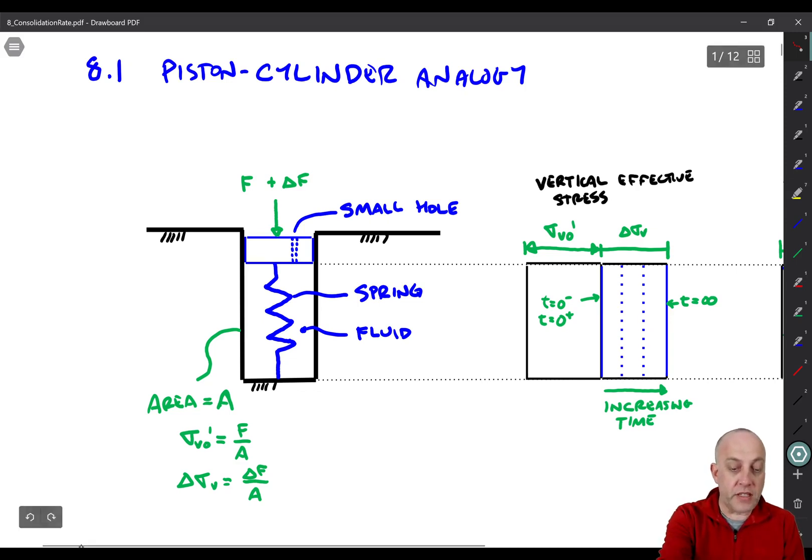So what we'll do now is take these forces and convert them to stresses. So sigma V0 prime is going to be the force in the spring divided by the cross-sectional area of the cylinder and delta sigma V is sigma V0 prime, the force applied up here divided by the cross-sectional area. And we're assuming that all of the force initially is in the spring.